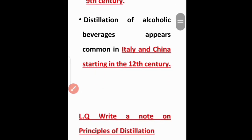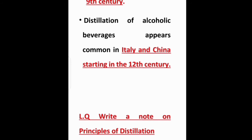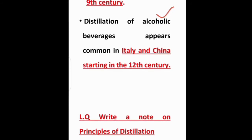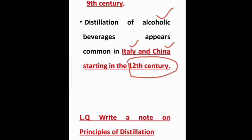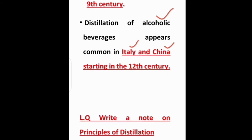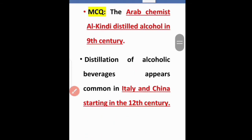The distillation of alcoholic beverages appeared common starting in the 12th century in Italy and China. These two countries are important to remember for MCQs — in the 12th century, distillation of alcoholic beverages started in Italy and China.